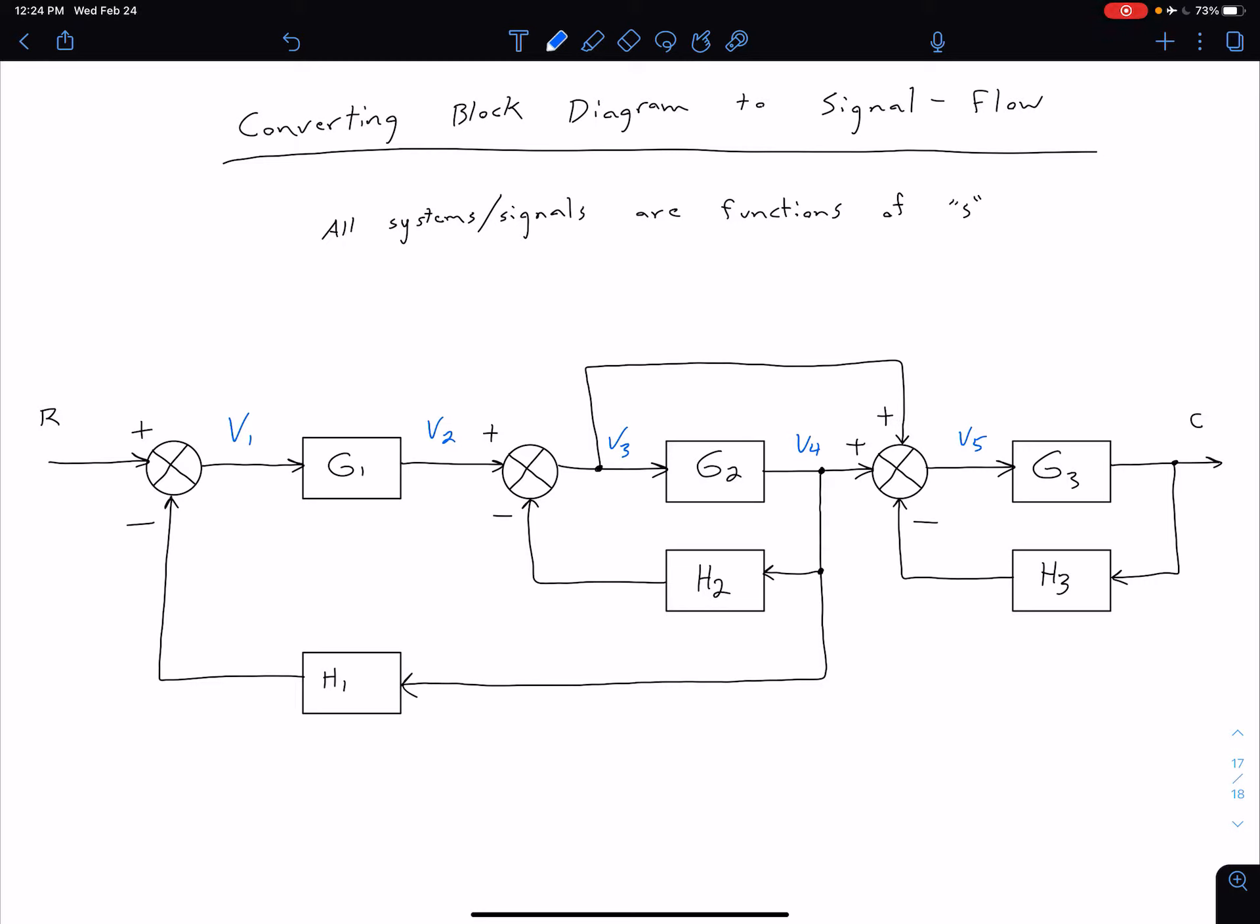Now going through our feedback loops, coming back through our H1, we can call the signal on the other side of H1 V6. So of course, over on this side, we've already labeled this signal as V4.